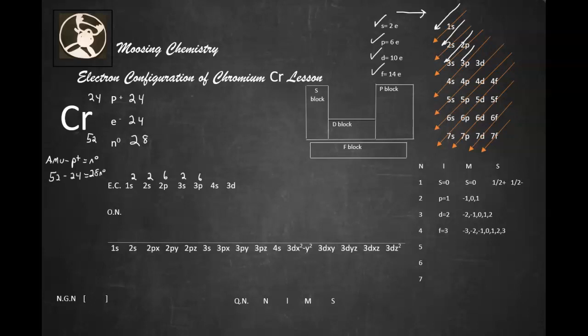Now notice I'm hesitating on that 4s2, because think about this for a second. If you write 4s2 3d4, you're going to be wrong, and I'm going to show you why. So we're going to count this as 4s1 3d5.